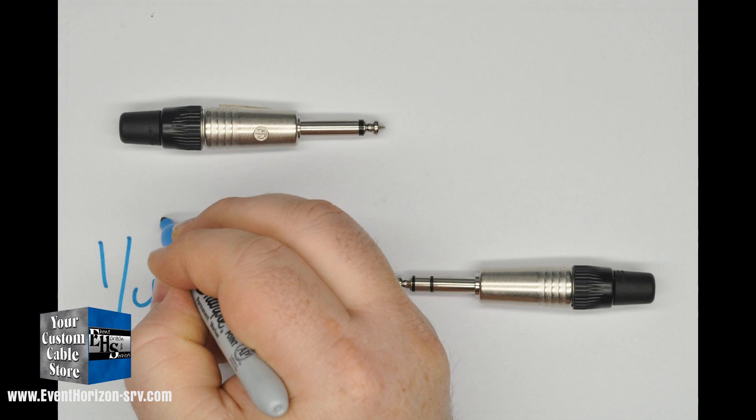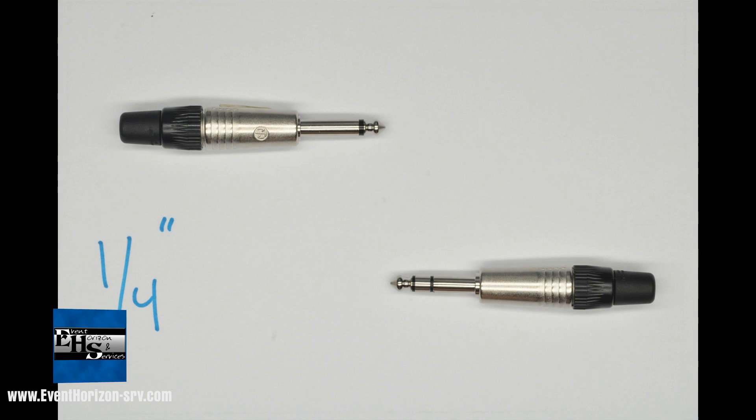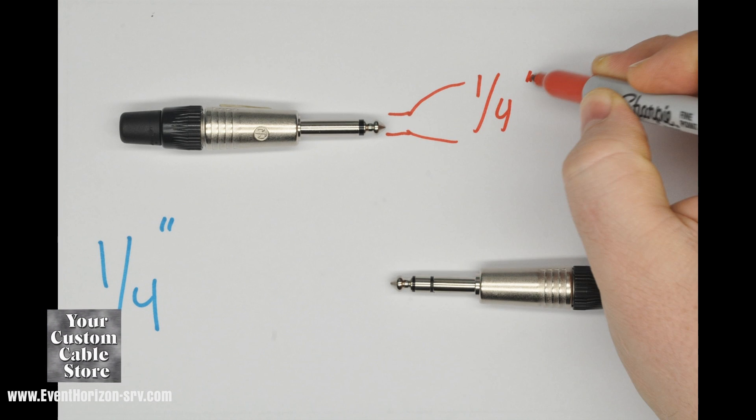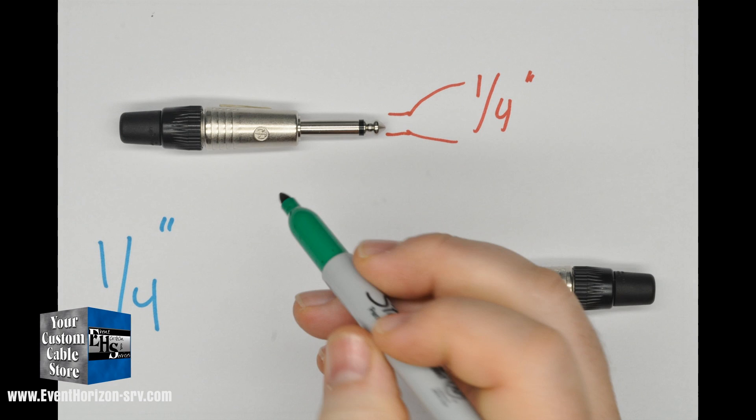Now, let's look at quarter-inch connectors. The quarter-inch connector is named for the diameter of the connector body, which is one quarter-inch. There are two main forms of quarter-inch connectors.